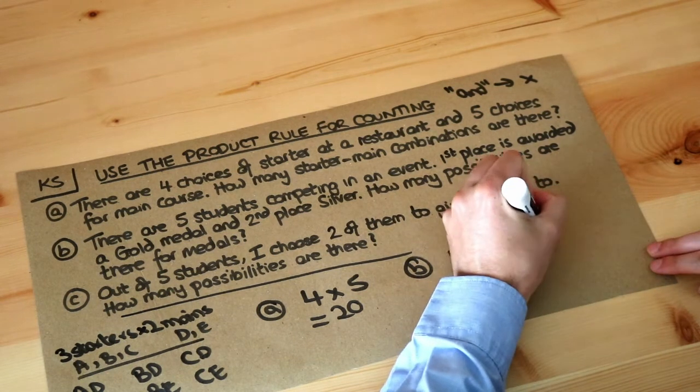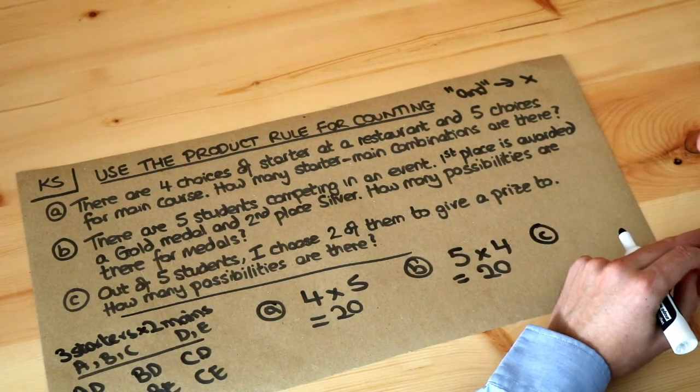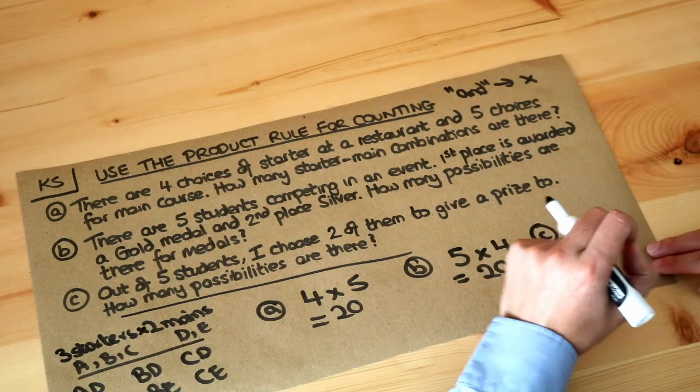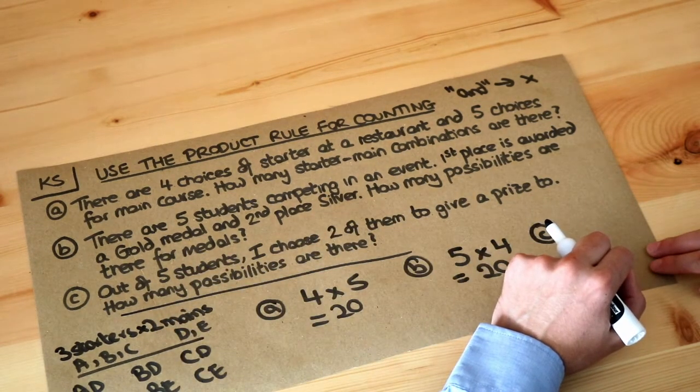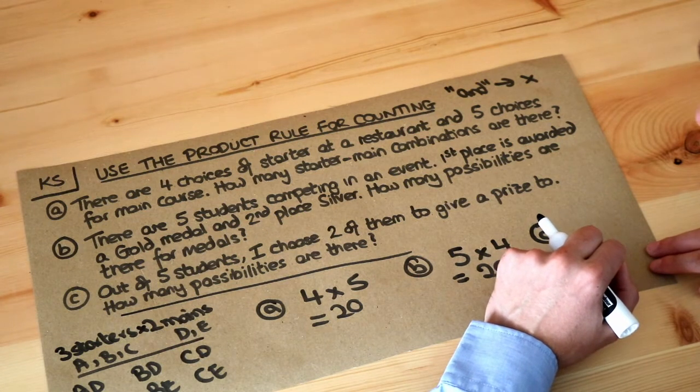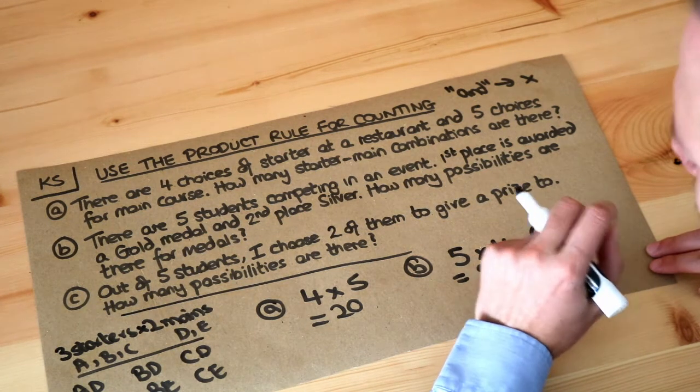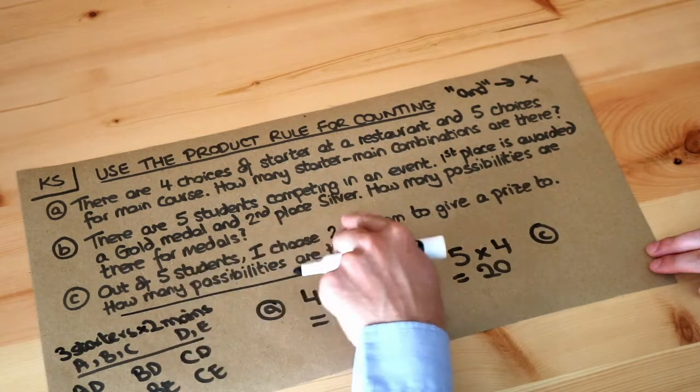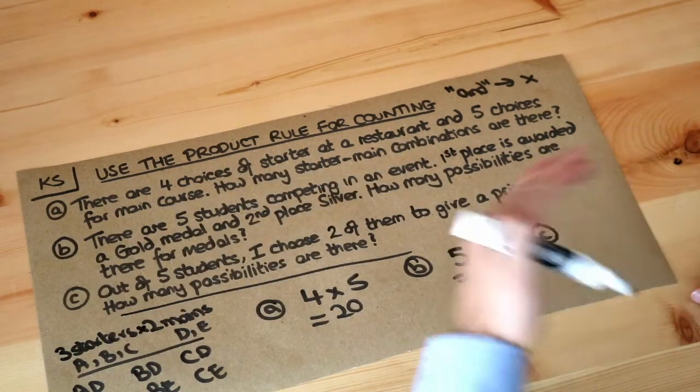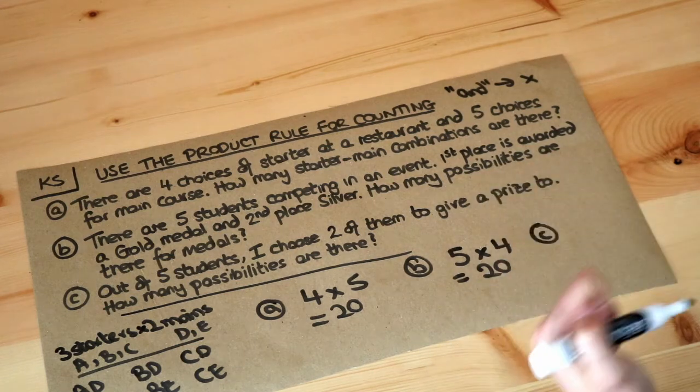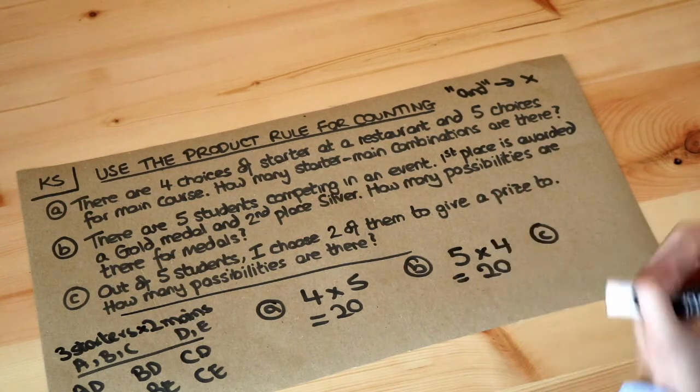Now C is a bit of a complicated one. It looks initially like it's going to be the same thing. Out of five students I choose two of them to give a prize to. How many possibilities are there? Now what students might do is they might just say I've got a five and I've got a two, I just multiply them together to get ten. But that's not really thinking about what's going on.